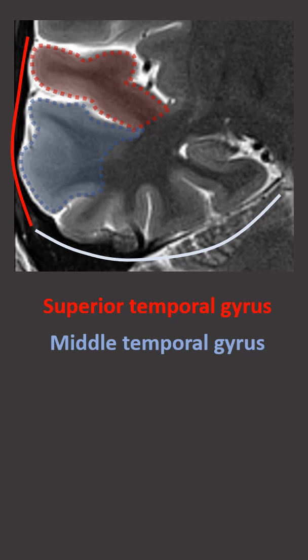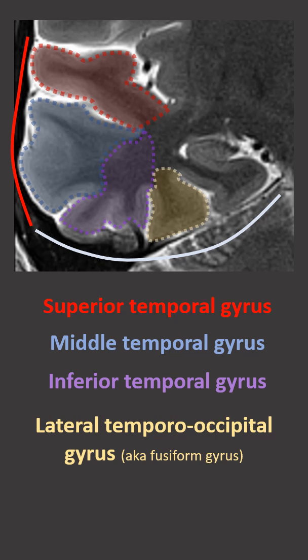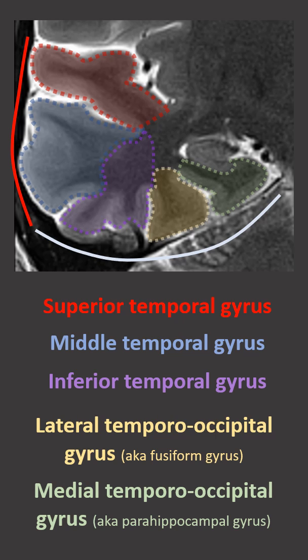Along the inferior surface or basal surface we have the inferior temporal gyrus, the lateral temporal occipital gyrus — also known as the fusiform gyrus — and the medial temporal occipital gyrus, also known as the parahippocampal gyrus.